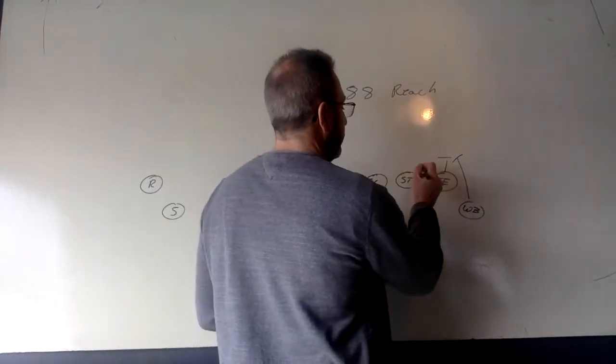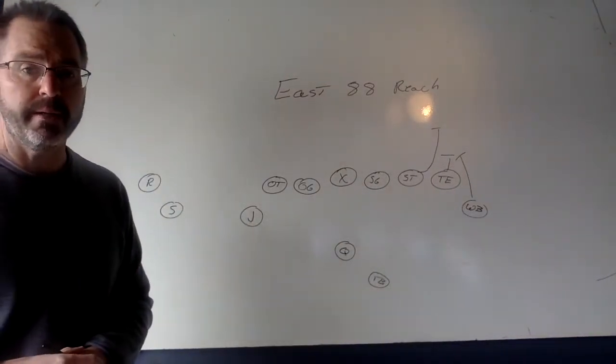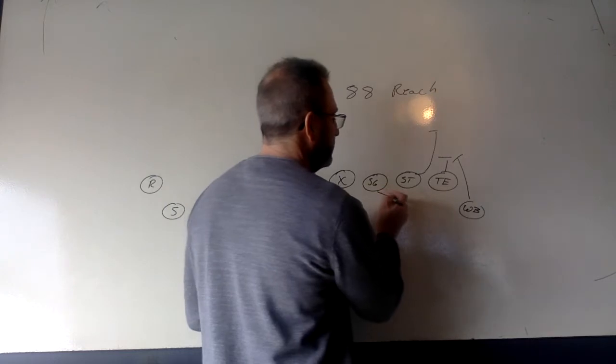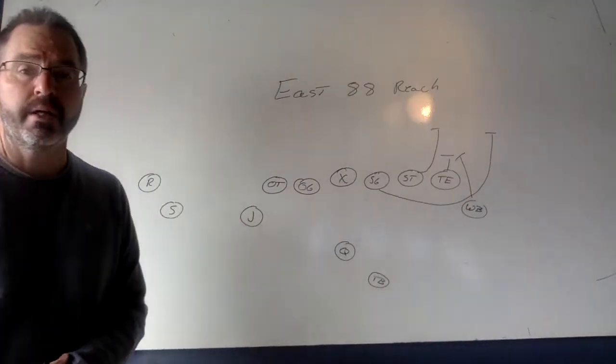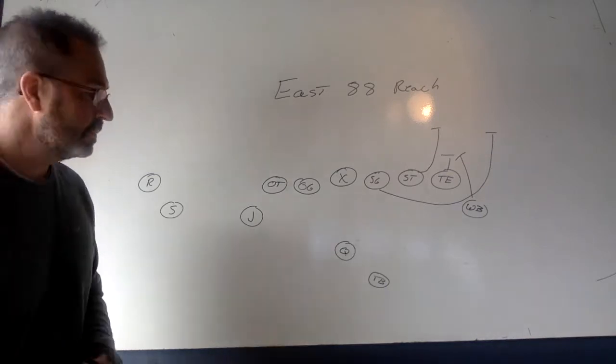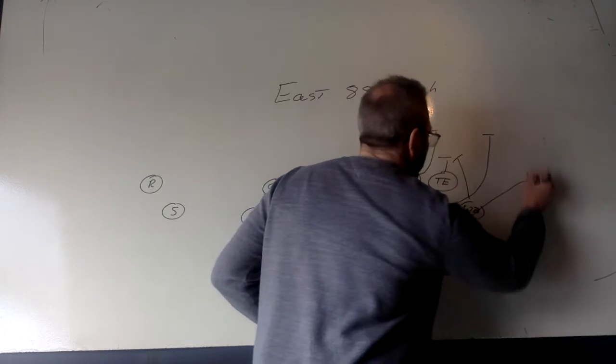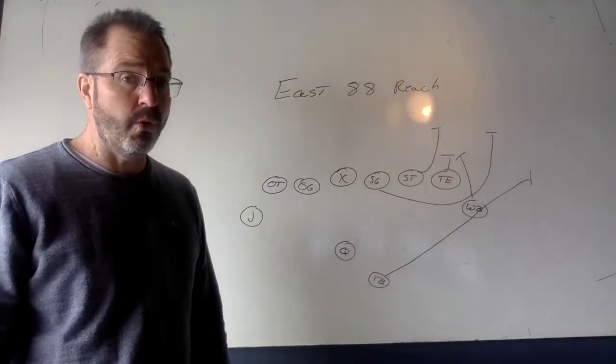Our strong tackle. You are going to take a reach step to the right and try to work up to a linebacker. Our strong guard. You are going to run the circle to the right, coming up into the alley. Tailback. You are going to kick out the first player from the sideline in, probably a cornerback.